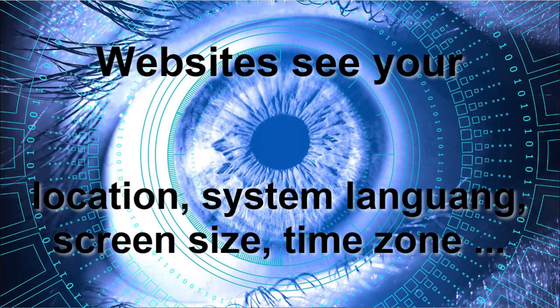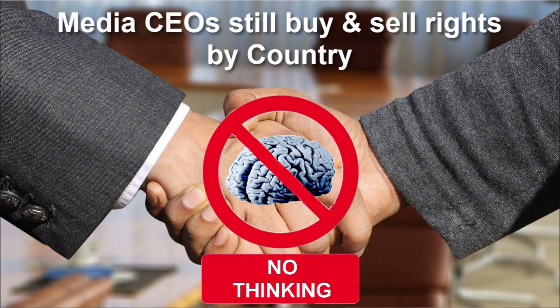First of all, websites see your location and your system and everything. So basically you cannot tell Netflix that you are in a different country and you cannot just choose a country you want. The bosses of the big media companies still buy and sell rights by country and not by language or other measures. So if you are in a specific country, you cannot just watch a different country's Netflix.